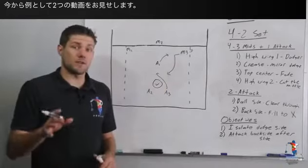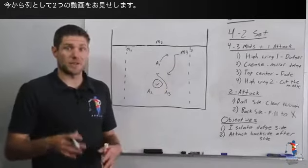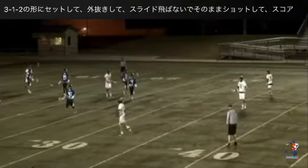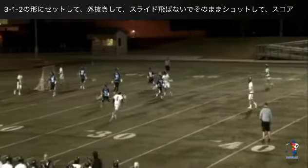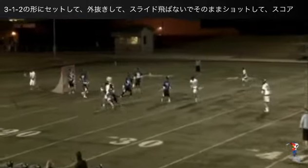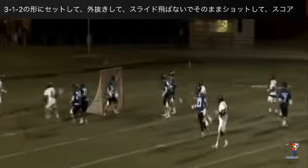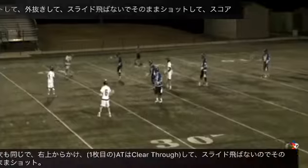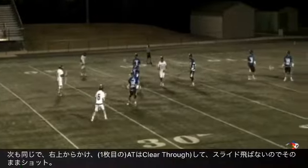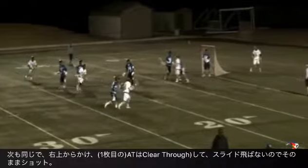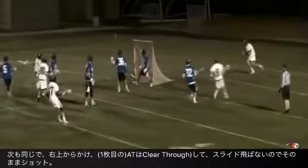Here are two videos of this offense working against our defense in a game two years ago. We see they're set up in a 3-1-2, dodge coming down the alley, no slide and he buries it. Next example, same basic thing, dodging down the righty alley, gets a nice shot off, misses cage.